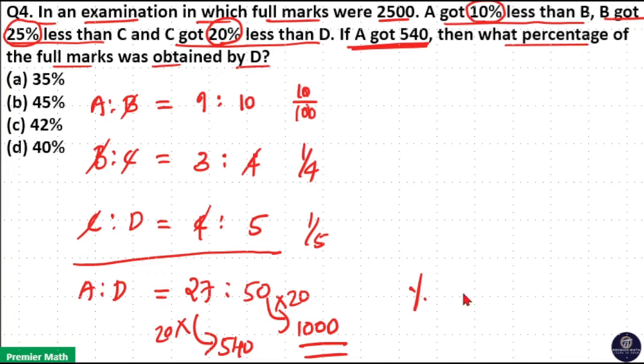So percentage of mark D got - total mark D got is 1000 mark out of full marks in examination which is 2500. If you convert it in terms of percentage, multiply it with 100. Here 25 goes 4 times in 100, zeros get cancelled, that is 40 percentage mark. So option D is your answer.